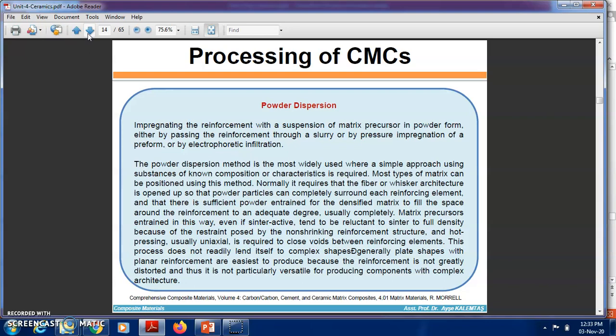Even if the ceramic powder is entrained in this way, it tends to be reluctant to sinter to full density because of the restraint posed by the non-shrinking reinforcement structure. Hot pressing is usually required to close voids between reinforcement elements. This process does not readily lend itself to complex shapes. Generally, plate shapes with planar reinforcements are easiest to produce.